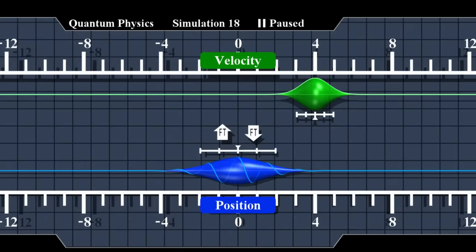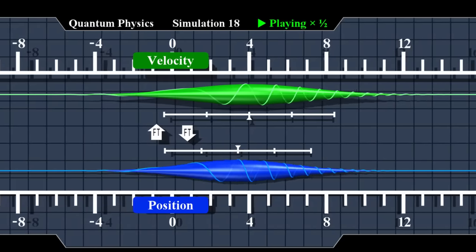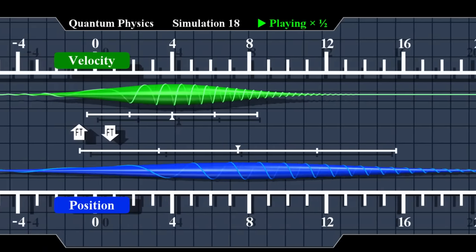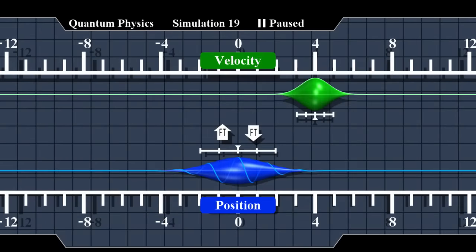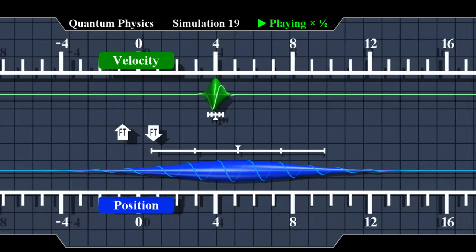And here's some more insight into this spreading phenomenon. If initially the uncertainty in position is low, then uncertainty in velocity must be high. So now the position wave will spread very fast, and vice versa. Now uncertainty in velocity is low, and the spreading phenomenon will hardly be noticed.